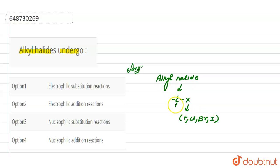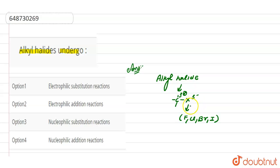Polarization occurs due to the accumulation of electrons towards the X atom. Consequently, the carbon atom obtains a partial positive charge and X obtains a partial negative charge. The presence of partial positive charge on carbon makes it susceptible to attack by an electron-rich group called a nucleophile. Thus, alkyl halide undergoes nucleophilic substitution reaction.